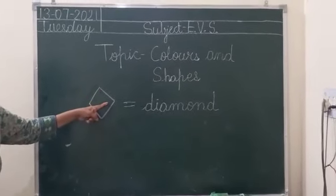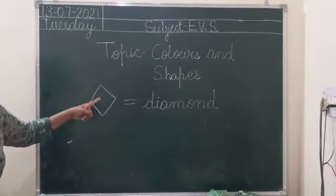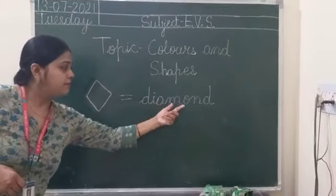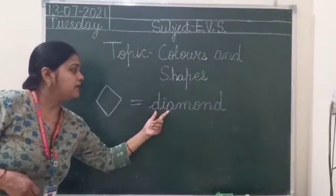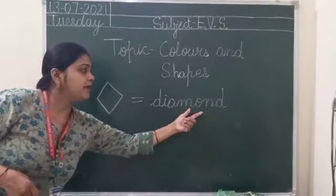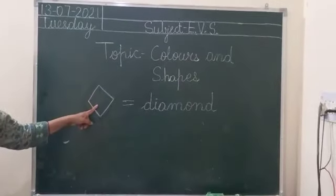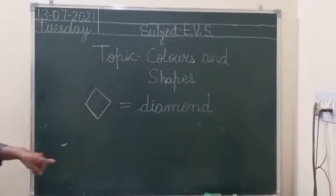Which shape is this? Diamond shape. This is diamond shape. Okay.